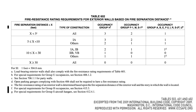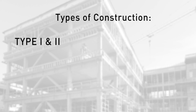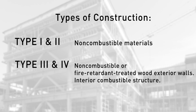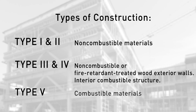There is also Table 602 for the exterior walls — the closer you are to another building, the more requirement you're going to have on the exterior wall. Type 1 and Type 2 are considered typically non-combustible construction. Type 3 and Type 4 are typically non-combustible on the exterior walls and combustible on the interior. Type 5 is any type of material, usually combustible material that's allowed per the Building Code.